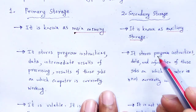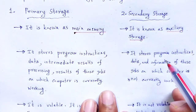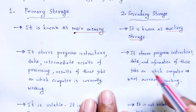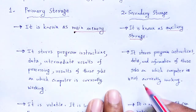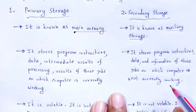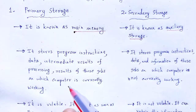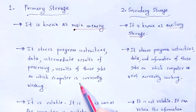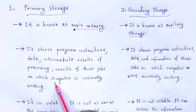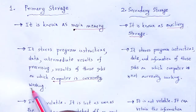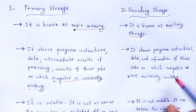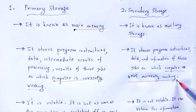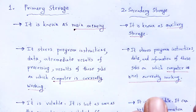But in secondary storage, it stores the program instructions, data, and information of those jobs on which the computer is not currently working. The data instructions stored in primary storage are those on which the computer is currently working, whereas data instructions for jobs the computer is not currently working on are stored in secondary storage.